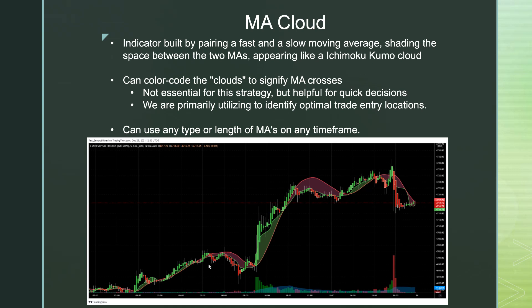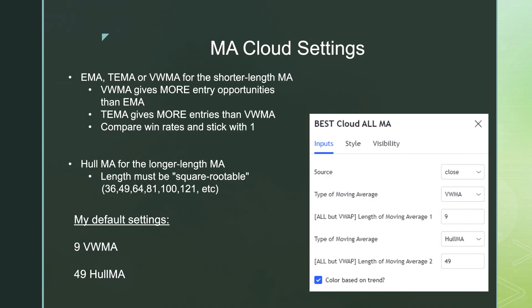We're not necessarily making a huge deal about what color the cloud is — we're actually using the cloud to identify opportunities to enter a trade. A pullback into the cloud is a good entry for a bullish trade. The truth is any settings will work sometimes, and there is no perfect setting that will work all the time. Spending too much time exploring all the different possible combinations is a waste of time.